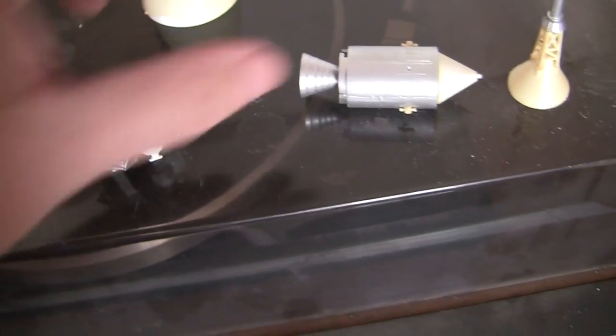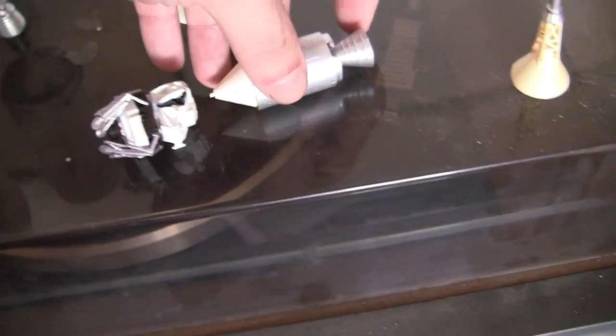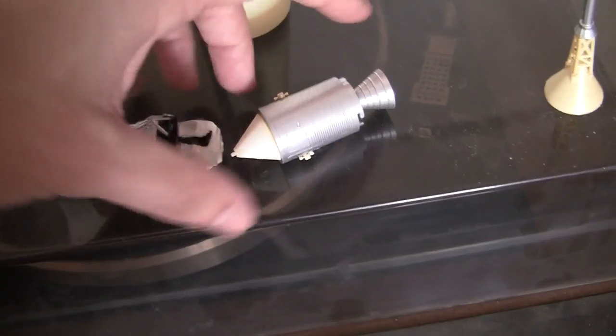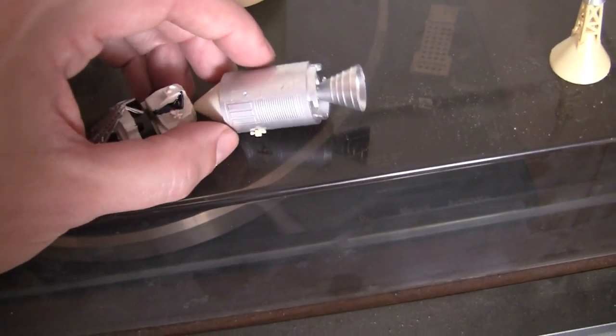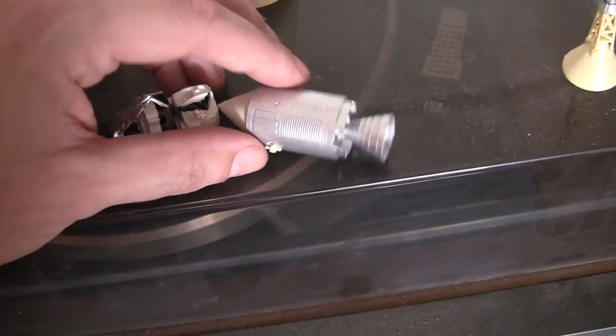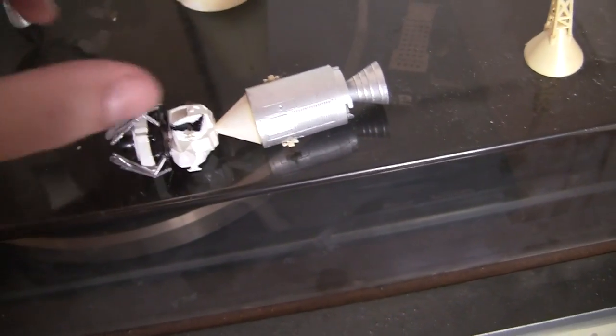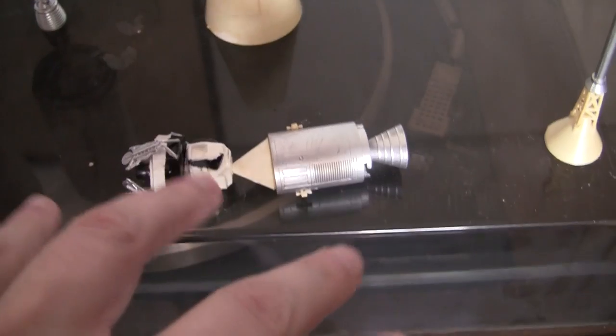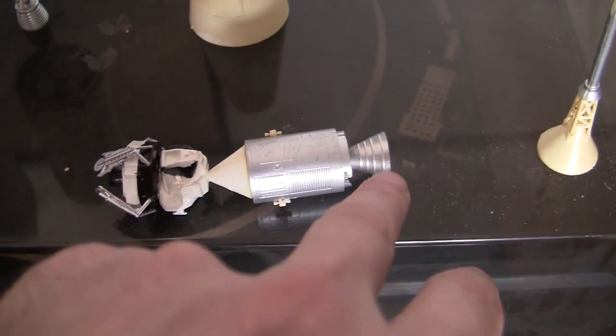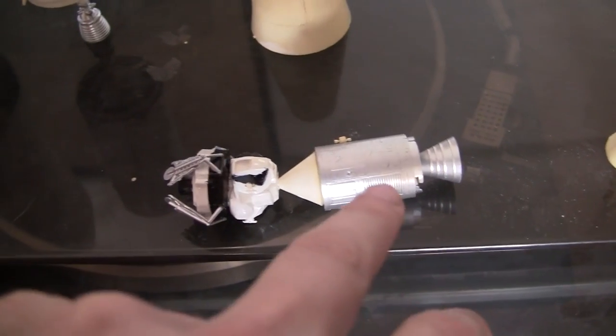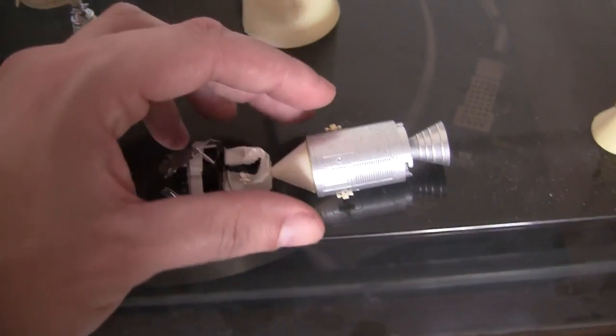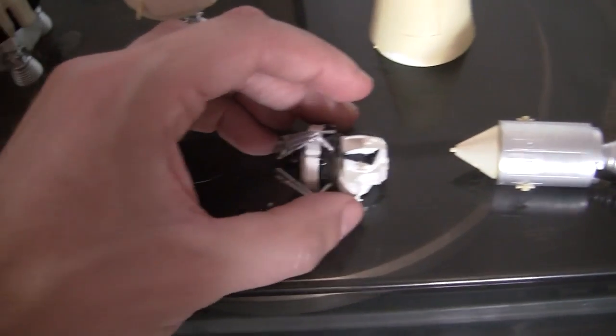And what would happen is, the command module turns around, and it docks with the lunar module. And I forget the details of the burns. But once it gets near the moon, this fires again, and that slows the whole thing down, and puts it basically into lunar orbit. At which point, this guy separates off.